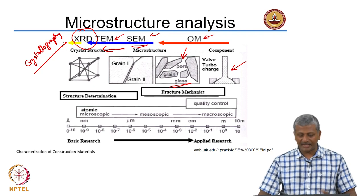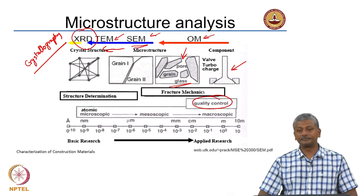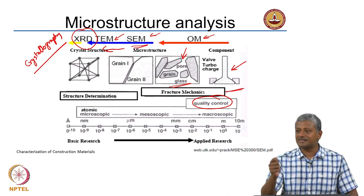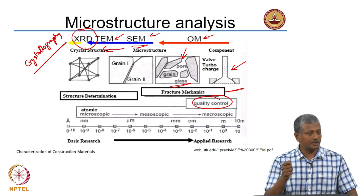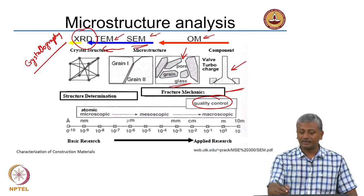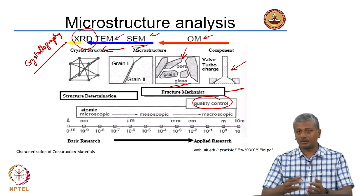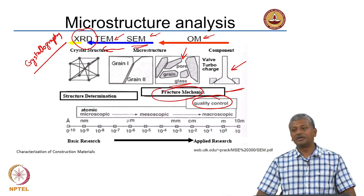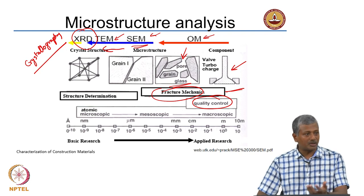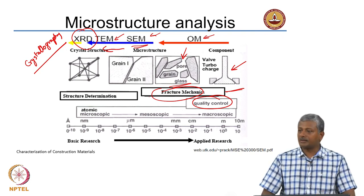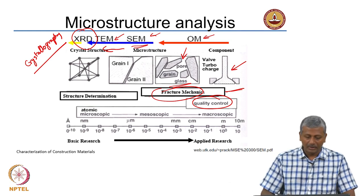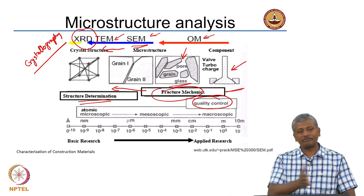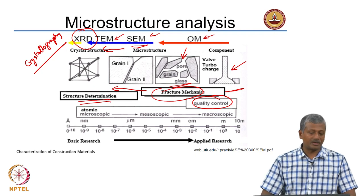For quality control, you can work at the visible range or with a magnifying lens. With optical microscopy, you can get grain distribution, pore sizes, and defects like cracks — relevant to fracture mechanics. For structure determination, you need to go finer, moving to TEM or X-ray diffraction. On the right side of the scale — length scales from tenths of millimeters to a few meters — we are talking about applied research. Basic research operates at angstrom or nanometer scales.